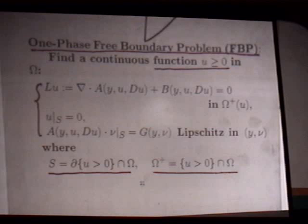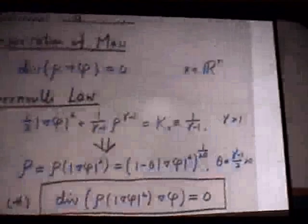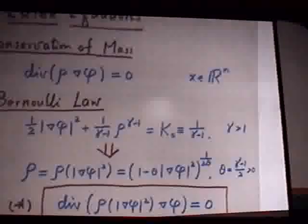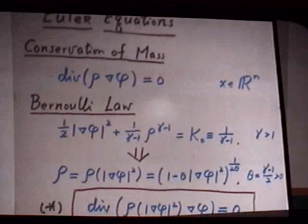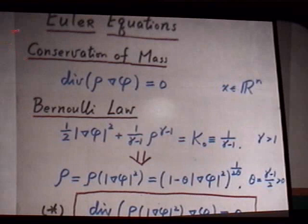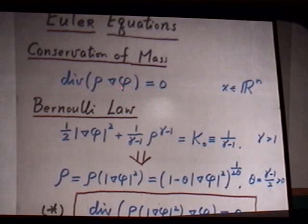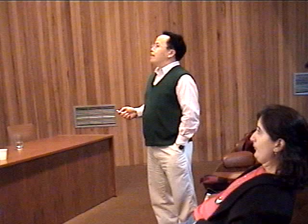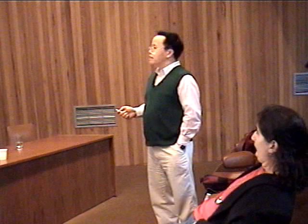A typical example is the multi-dimensional transonic shock. Compressible inviscid steady potential flow is governed by the Euler equations: the conservation of mass, div(ρ ∇φ) = 0, where φ is the velocity potential, and the Bernoulli law, which takes the form ½|∇φ|² + c²/(γ−1) = const. From the Bernoulli law one can write the density ρ as a function of |∇φ|², and substituting into the conservation of mass gives a second-order nonlinear equation for φ, the velocity potential.